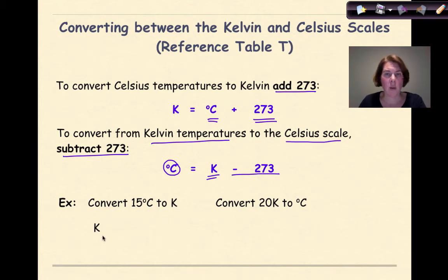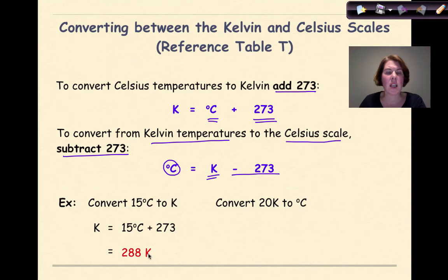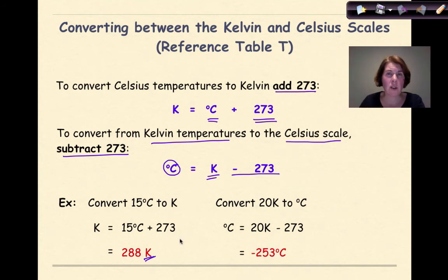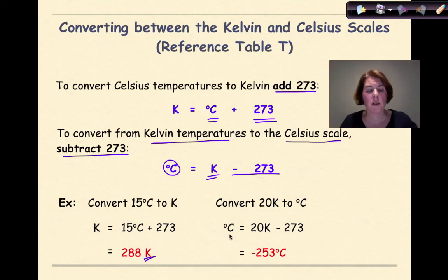Let's look at two examples. Convert 15°C to Kelvin: K = 15 + 273 = 288 K — make sure to label your answer. Convert 20 K to Celsius: °C = 20 − 273 = −253°C. Be careful to remember: add 273 when going from Celsius to Kelvin, subtract 273 when going from Kelvin to Celsius.